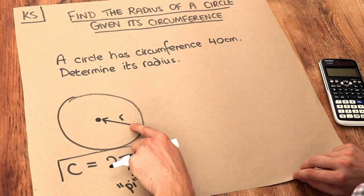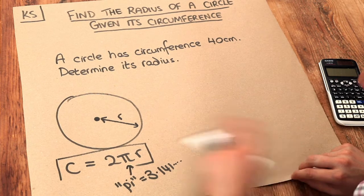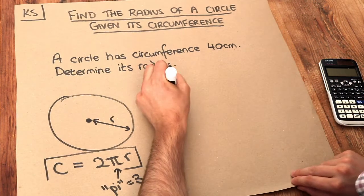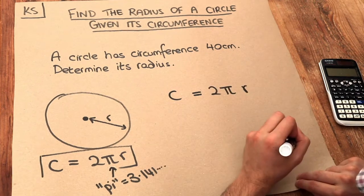Now usually we have a radius and we want to get the circumference, but now we're doing it the opposite way round. But we can still just use this formula in the usual way. It's just we have a few extra steps at the end.